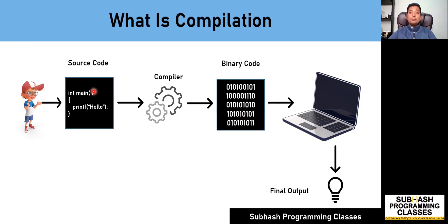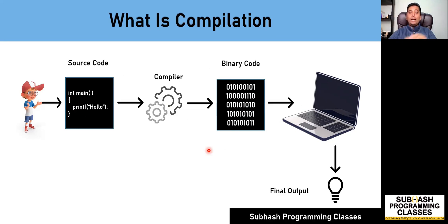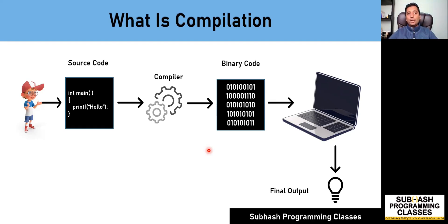That is the reason programmers make use of high level programming languages like C, C++, Java, Python, and so on. But the problem is that computers don't understand high level source code, and programmers cannot write binary code. So we need an intermediate tool that can convert source code written by programmers into binary code understandable by the CPU. That intermediate tool is called the compiler, and the whole process is called compilation.